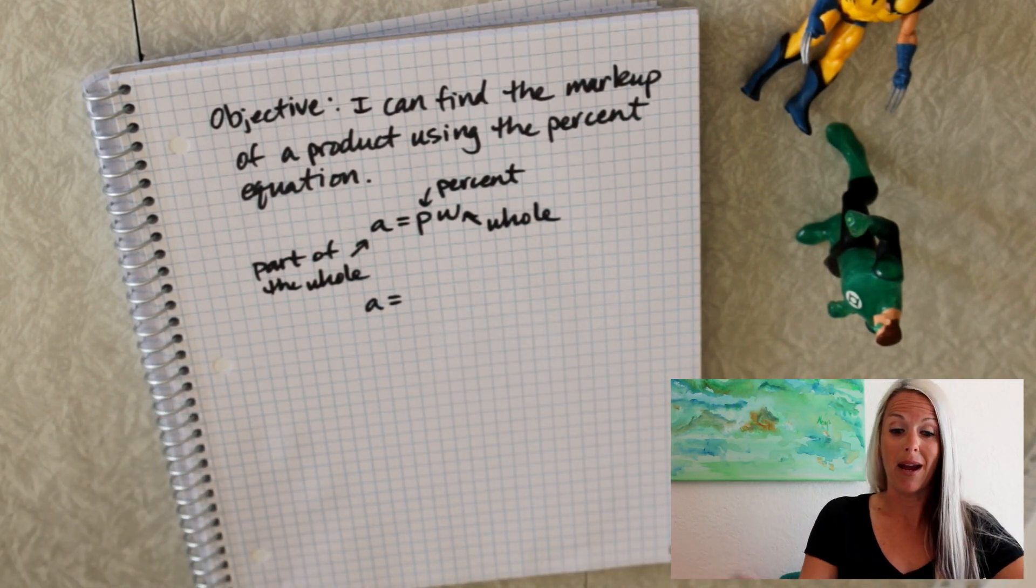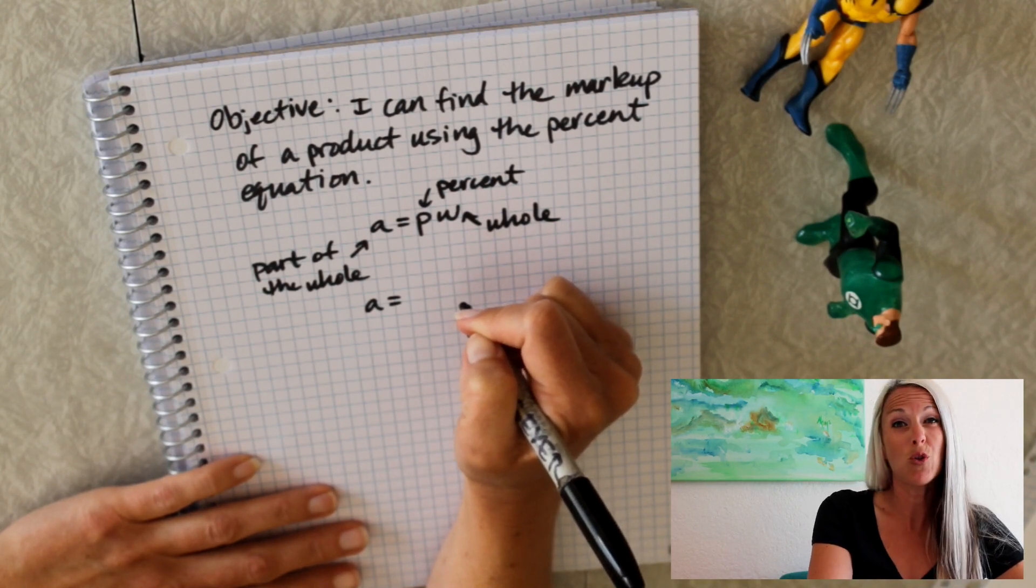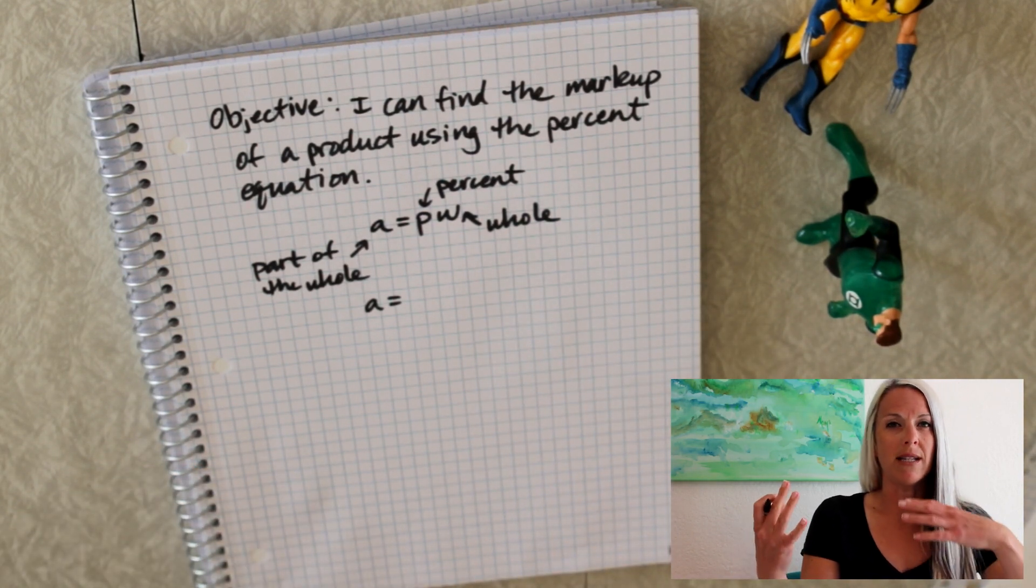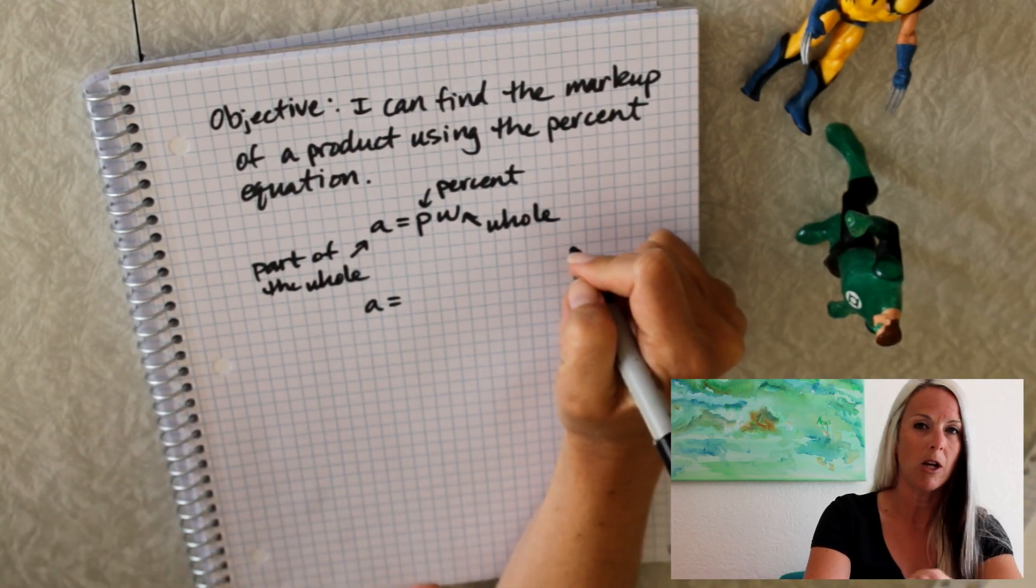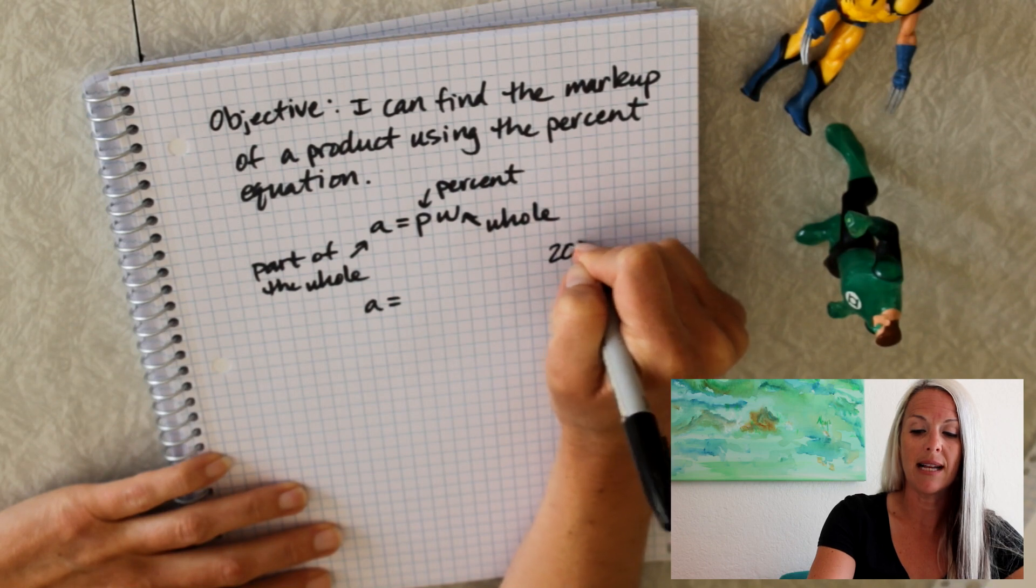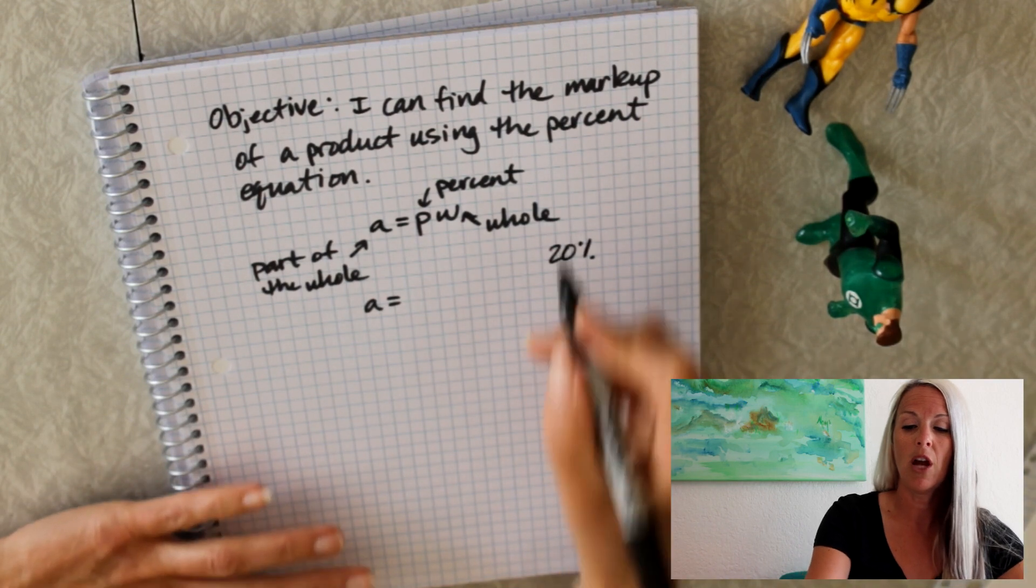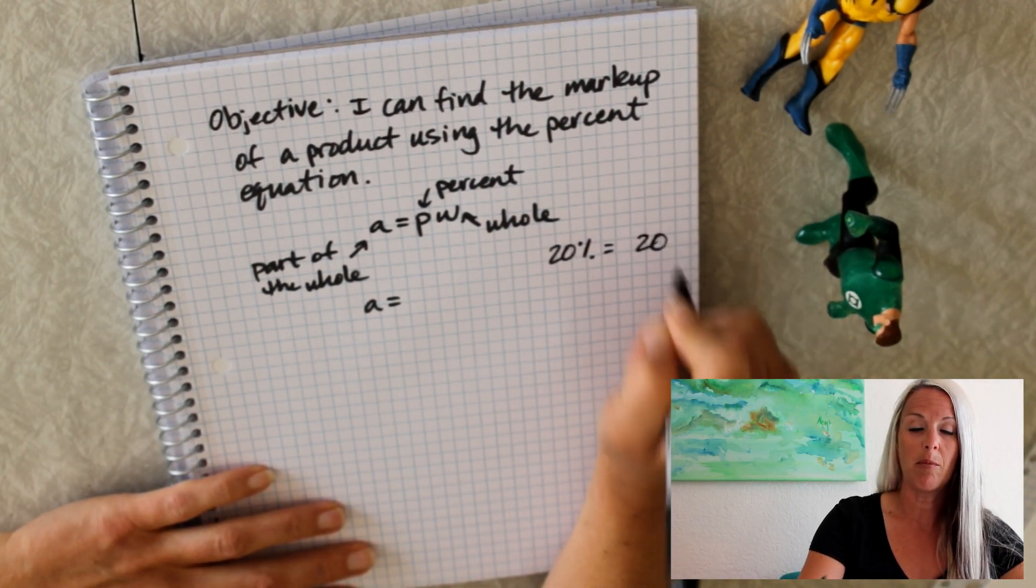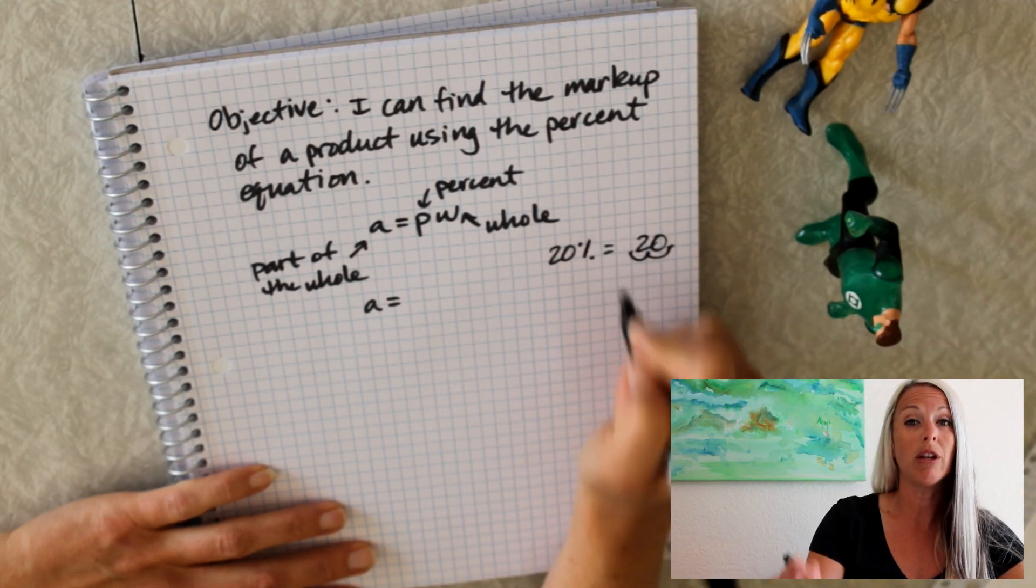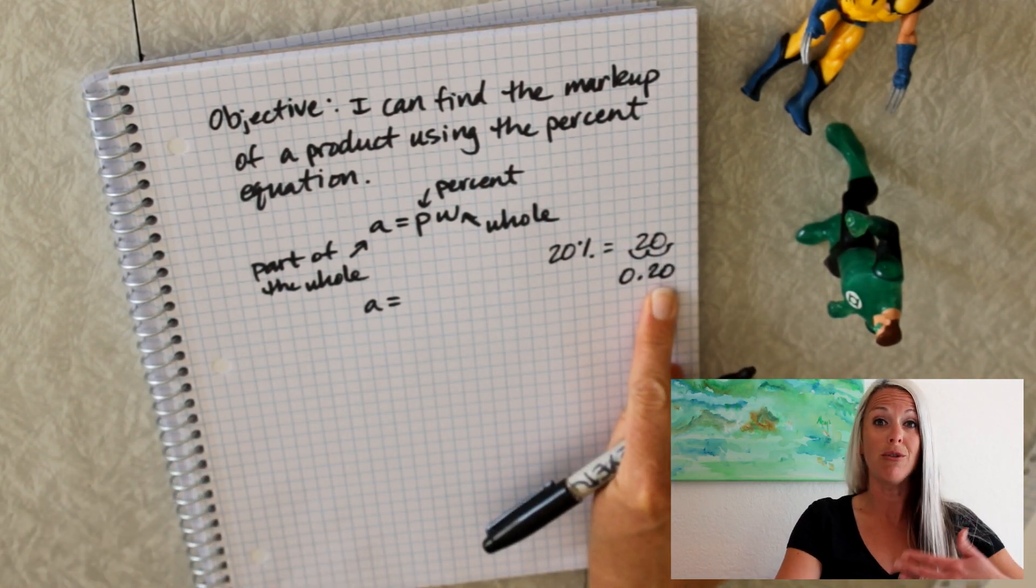Logan is going to buy a bike for 70 bucks. That's the whole price. He's going to mark it up for 20%. So remembering that when we deal with 20% in the math world, in an equation, we're wanting to use the decimal version of the percent. So 20%, how do we convert that to a decimal? We drop that percent sign. We have the number 20. We've got our invisible decimal there. We move it over two times. And now we know that 20% is equal to 20 hundredths or two tenths.